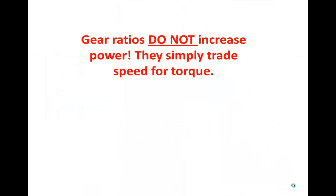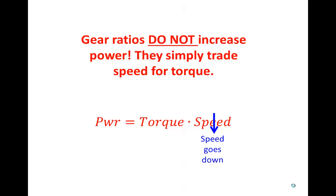A common misconception about transmissions is that they somehow magnify the power — that is completely incorrect. Gear ratios do not increase power; they simply trade speed for torque. To calculate rotational power, you just take the torque and multiply it by the speed. If a gear ratio causes the speed to go down by a factor of 2, then the torque will go up by a factor of 2, which results in no change in power due to the gear ratio.